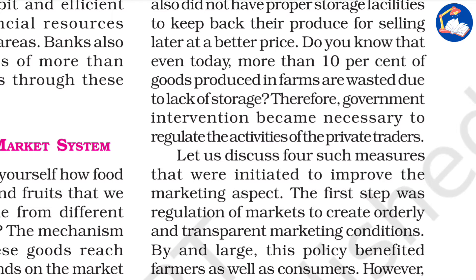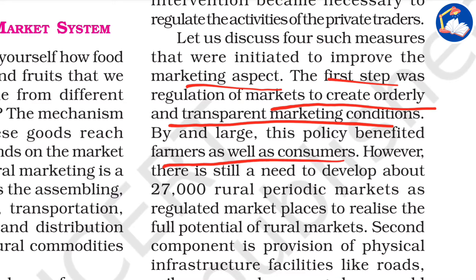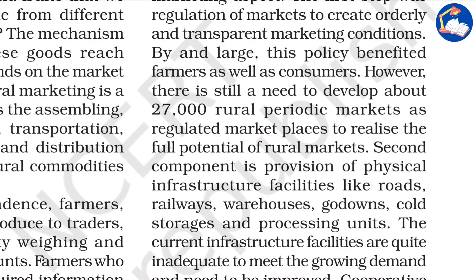Let us discuss four measures initiated to improve the agriculture marketing system. The first is regulation of markets to create orderly and transparent marketing conditions. By and large, this policy benefited farmers as well as consumers. However, there is still a need to develop more than 27,000 rural periodic markets as regulated marketplaces to realize the full potential of rural markets.